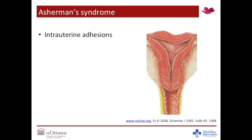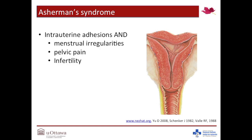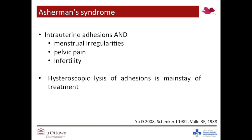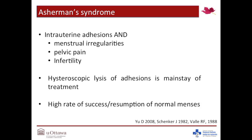Asherman syndrome is characterized by the presence of intrauterine synechia, as well as symptoms such as amenorrhea, pelvic pain, or infertility. Hysteroscopic lysis of adhesions is regarded as the mainstay of treatment and results in a high rate of resumption of normal menses. Adhesiolysis does carry a risk of uterine perforation, and repeat procedures may be required to achieve sustainable results.